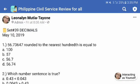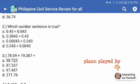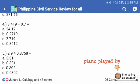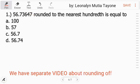Now let's do set number 39 and this is about decimals. Question number one: 53.73647 rounded to the nearest hundredth is equal to what? Pag may 'th' after, that indicates decimal place.